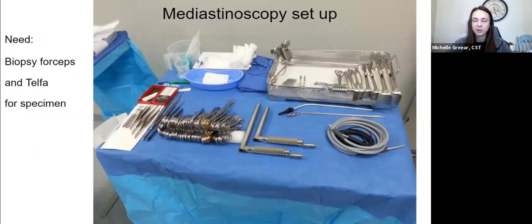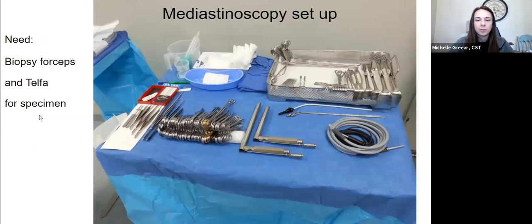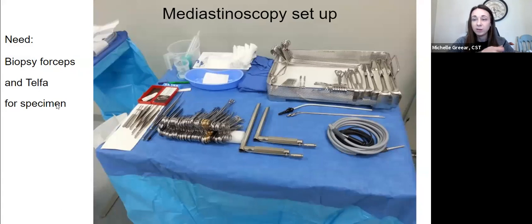Here is your setup — you can see what the scope looks like and all the grasping forceps and biopsy forceps in the back of the basket ready to go. For mediastinoscopy setup, just like for bronchoscopy, you still need biopsy forceps and telfa for your specimen. You might still need that 22-gauge needle to get the specimen out of the biopsy forcep — it's always going to go on a telfa because it's going to be a very small specimen. They're going to put it on that shiny telfa dressing inside a specimen cup.